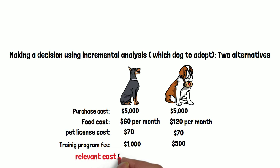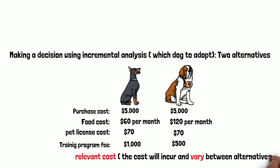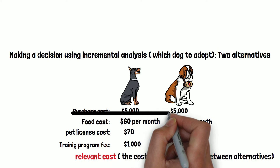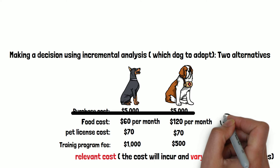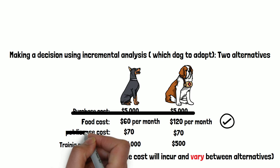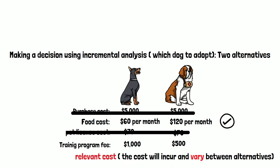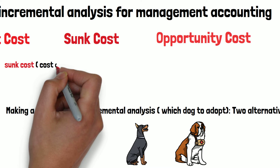So what is relevant cost in this analysis? The relevant cost is the cost we incur that will vary between the alternatives. In this case, the purchase cost is $5,000 for both — that cost doesn't vary, so it's not a relevant cost. The food cost varies, so it's a relevant cost. Similarly, the licensing fee is $70 for both, so it's not relevant. But the training program fee varies, so it is a relevant cost.